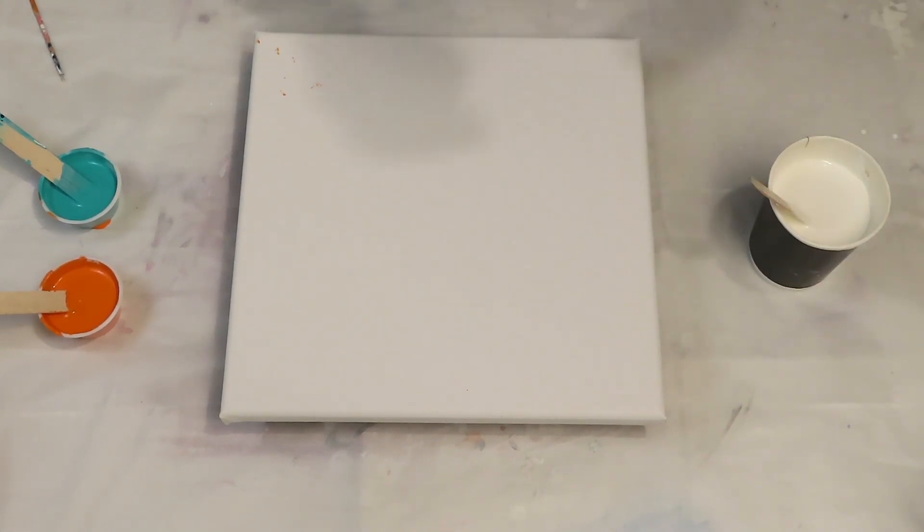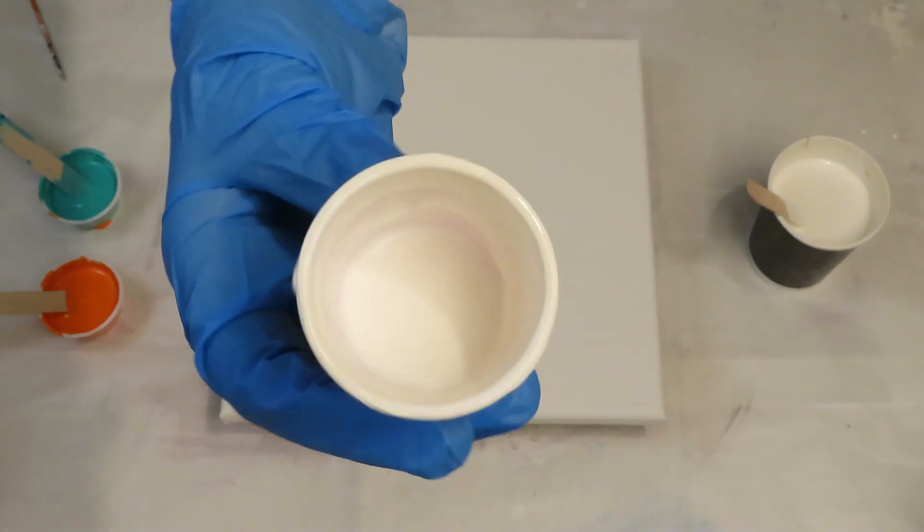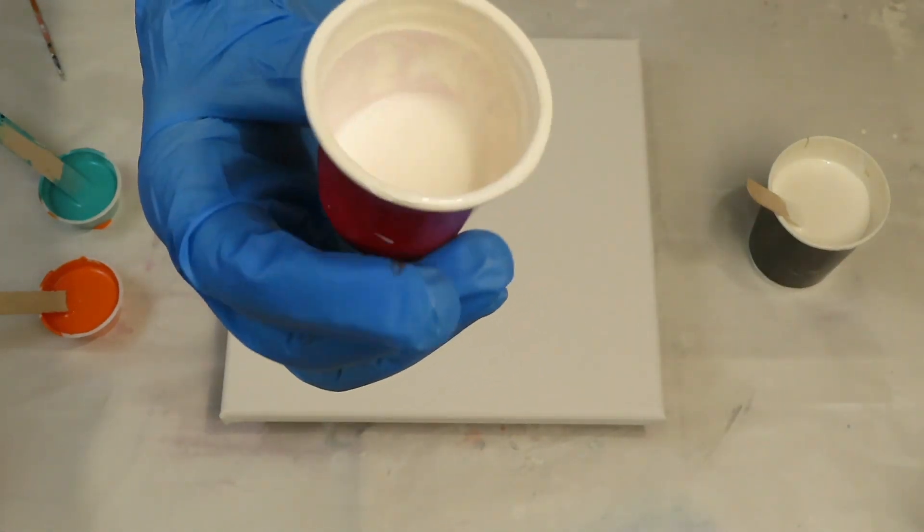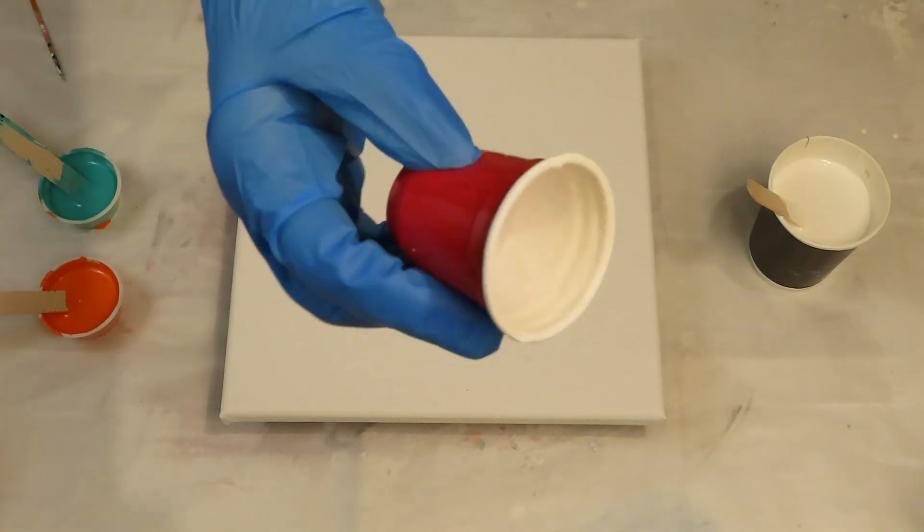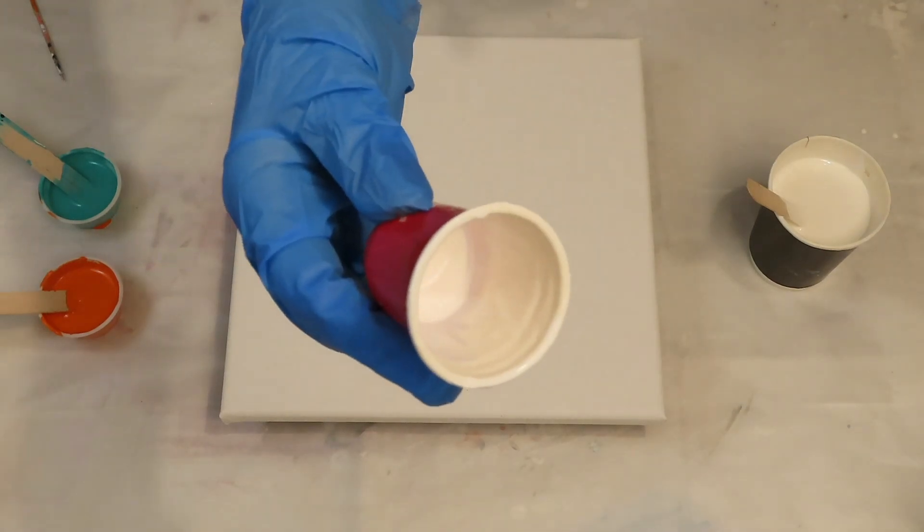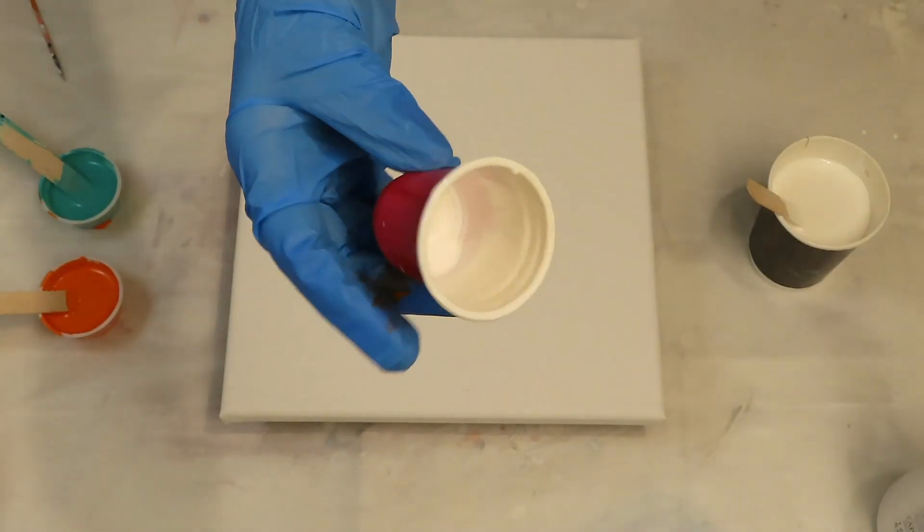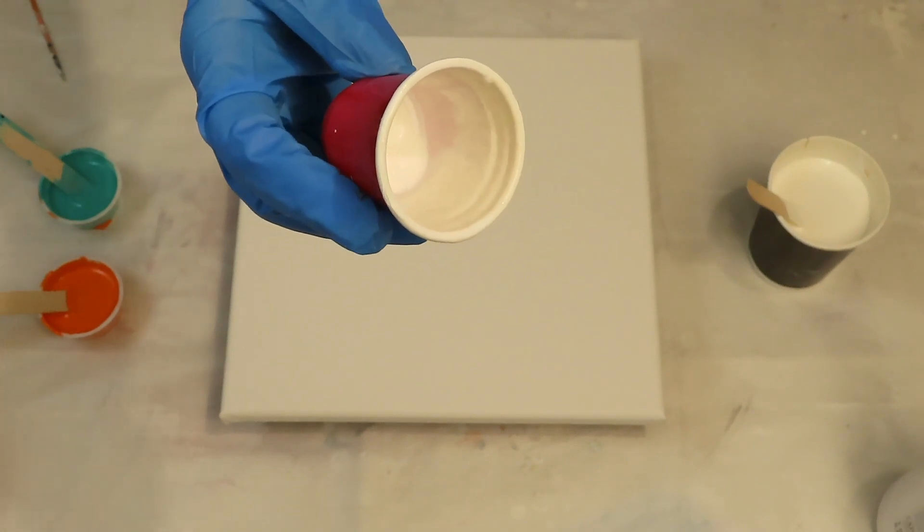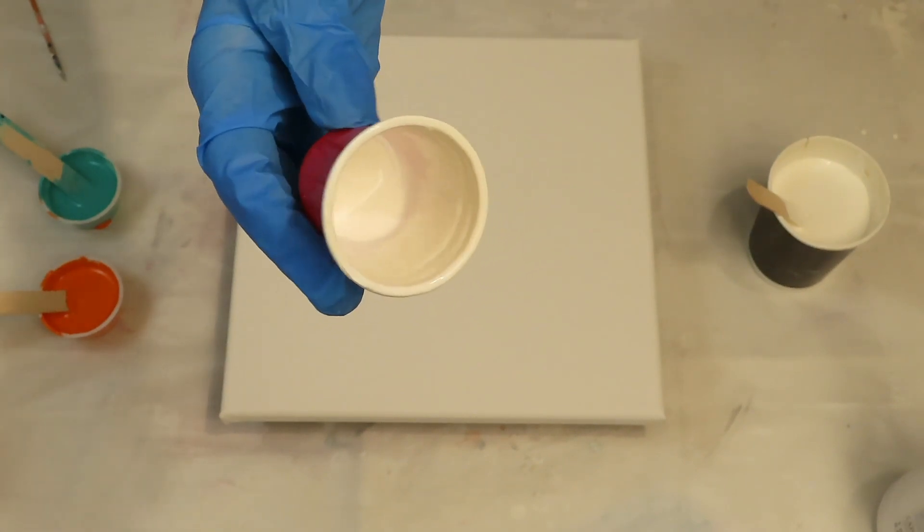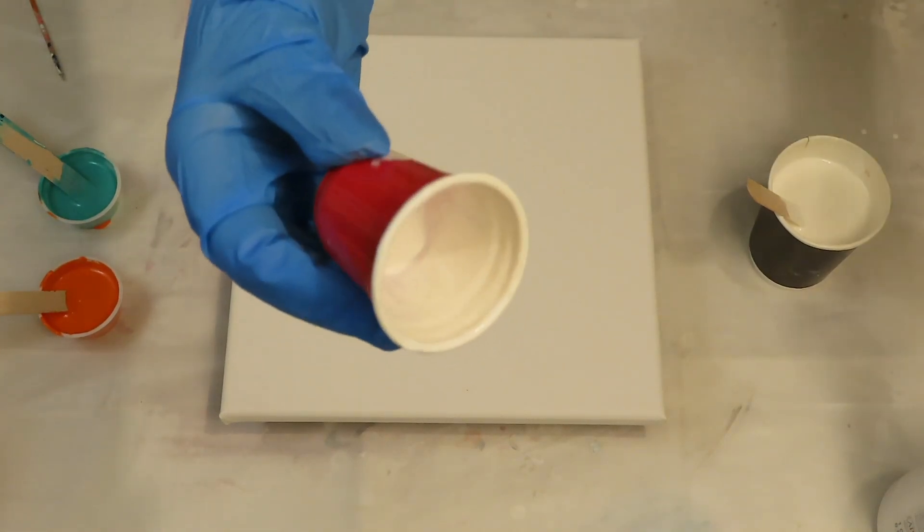So I took a little, I don't know how many ounces, I think this is a two ounce little shot cup I got at Dollar Store. And I did this, I put two of these cups, two parts Artist Loft White, one part, one of these cups of the Behr satin enamel from Home Depot, and two of these cups full of Liquitex pouring medium.